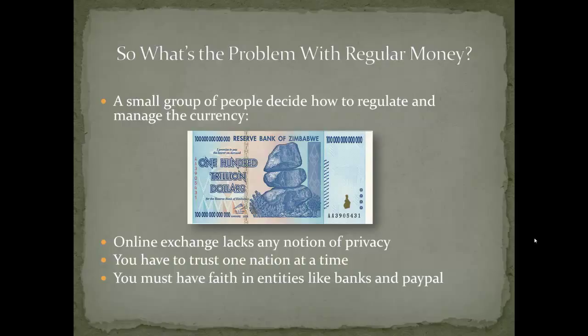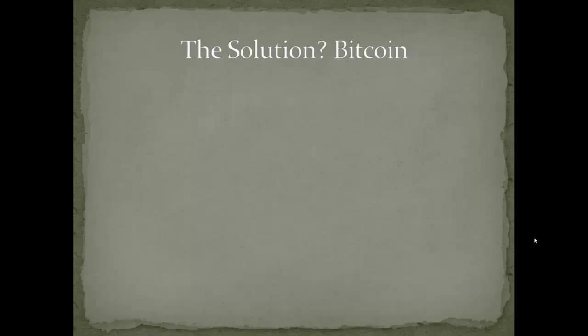So how do we solve these problems? We understand money is important and can have value, but it has foundational flaws — privacy flaws, lots of faith in people you've never met making decisions in your best interest, some of whom belong to other governments and probably don't have your best interest at heart. A gentleman named Satoshi Nakamoto — and that's actually a pen name, we don't know who he really is — sat down and thought very deeply for a long time.